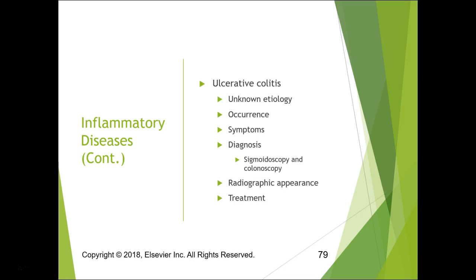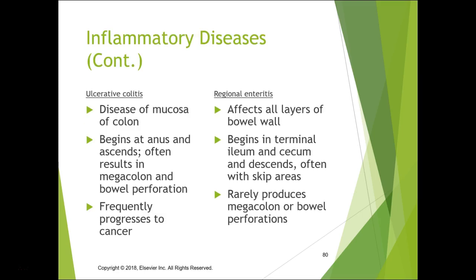Ulcerative colitis has unknown etiology, diagnosed with colonoscopy, sigmoidoscopy, or air contrast barium enema — be careful not to perforate the bowel. It affects the mucosa of the colon, begins at the anus and ascends, often results in megacolon and bowel perforation, and can progress to cancer. Regional enteritis affects all layers of the bowel wall. Crohn's begins at the terminal ileum and cecum and descends with skip lesions, whereas ulcerative colitis starts at the anus and goes backward. Crohn's rarely produces megacolon or bowel perforation.